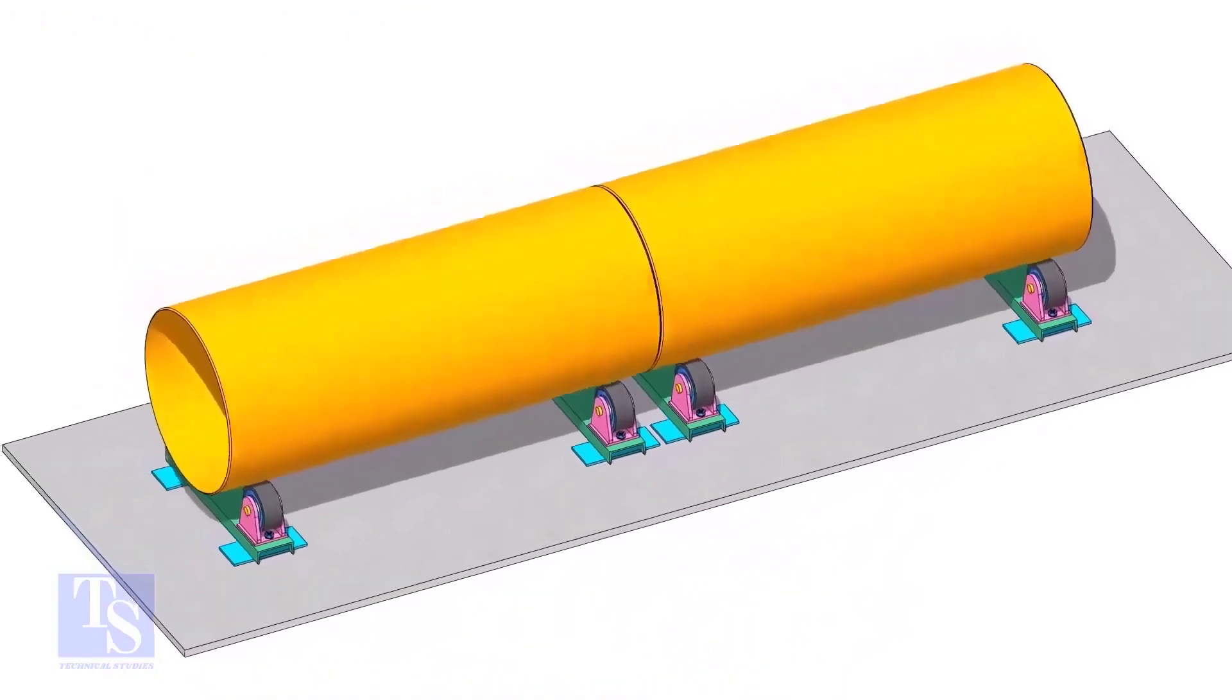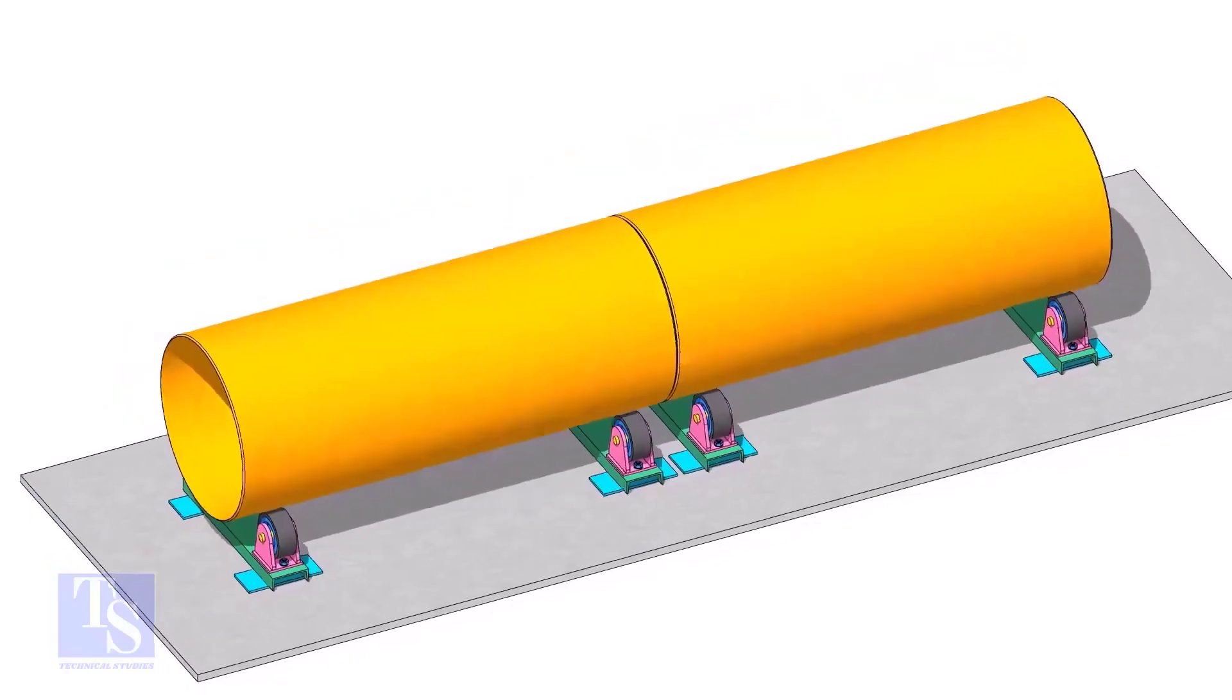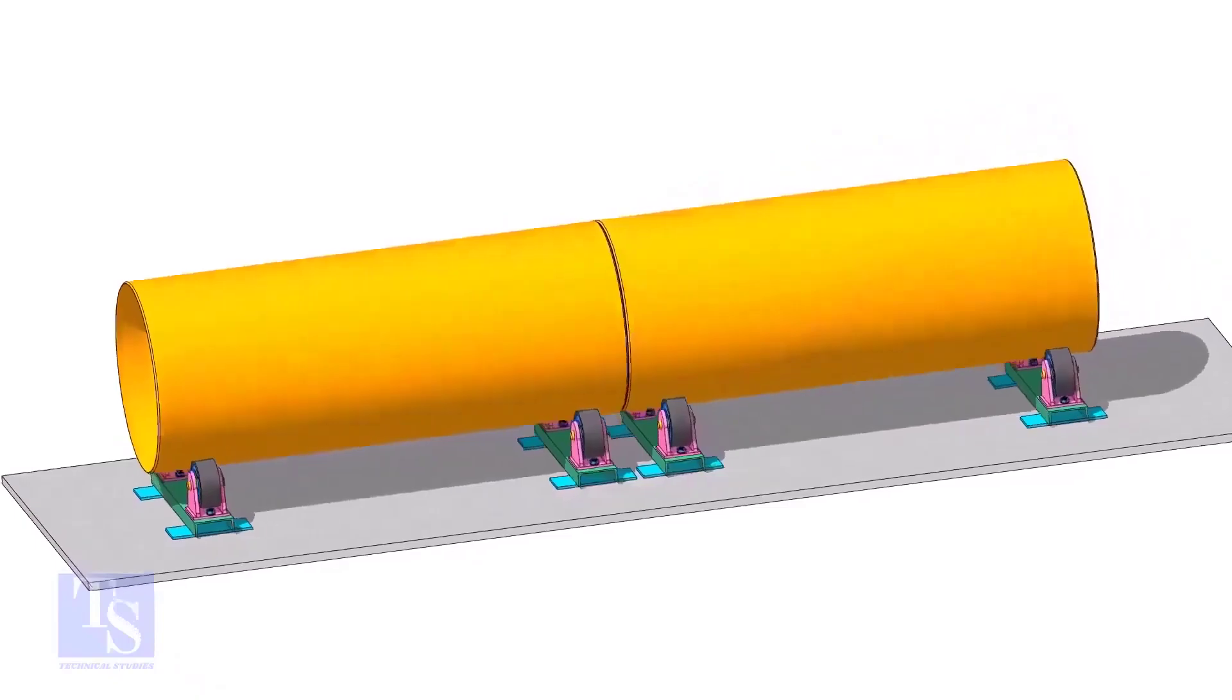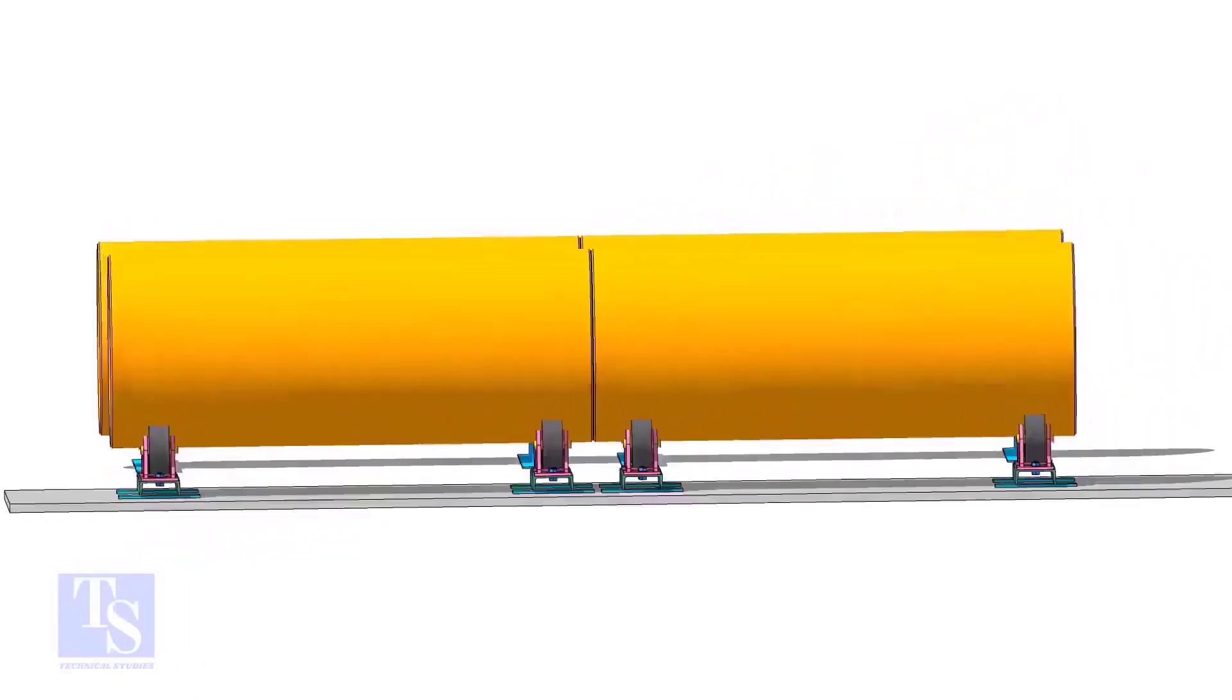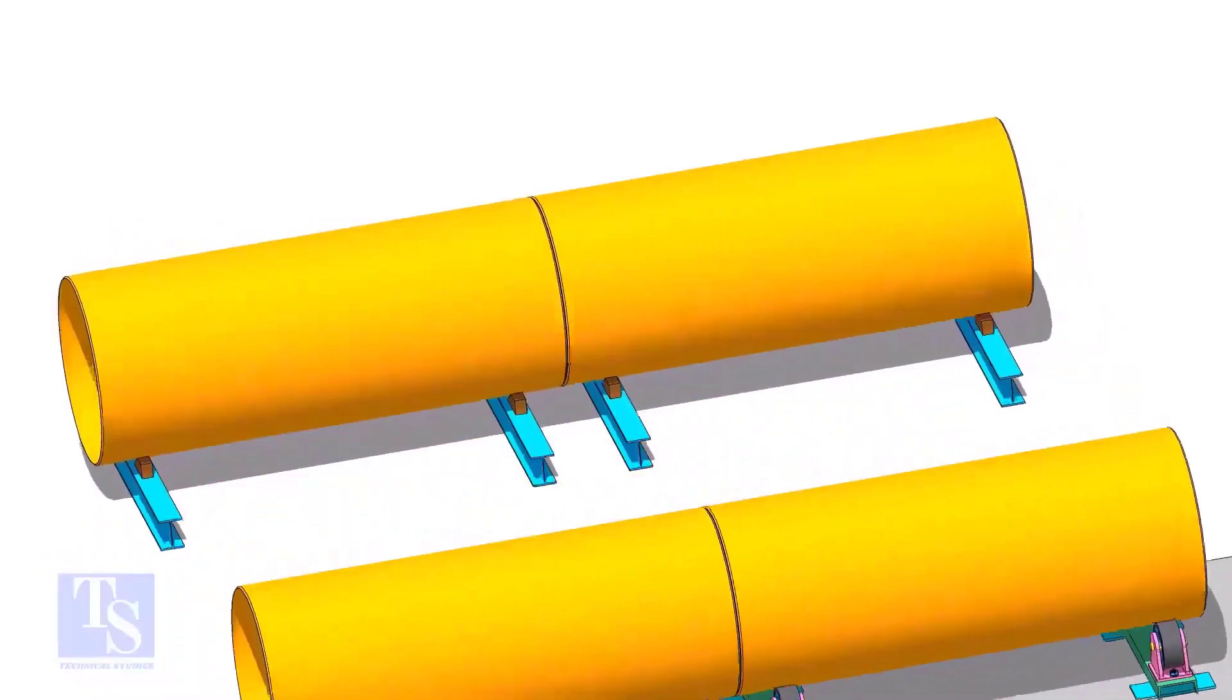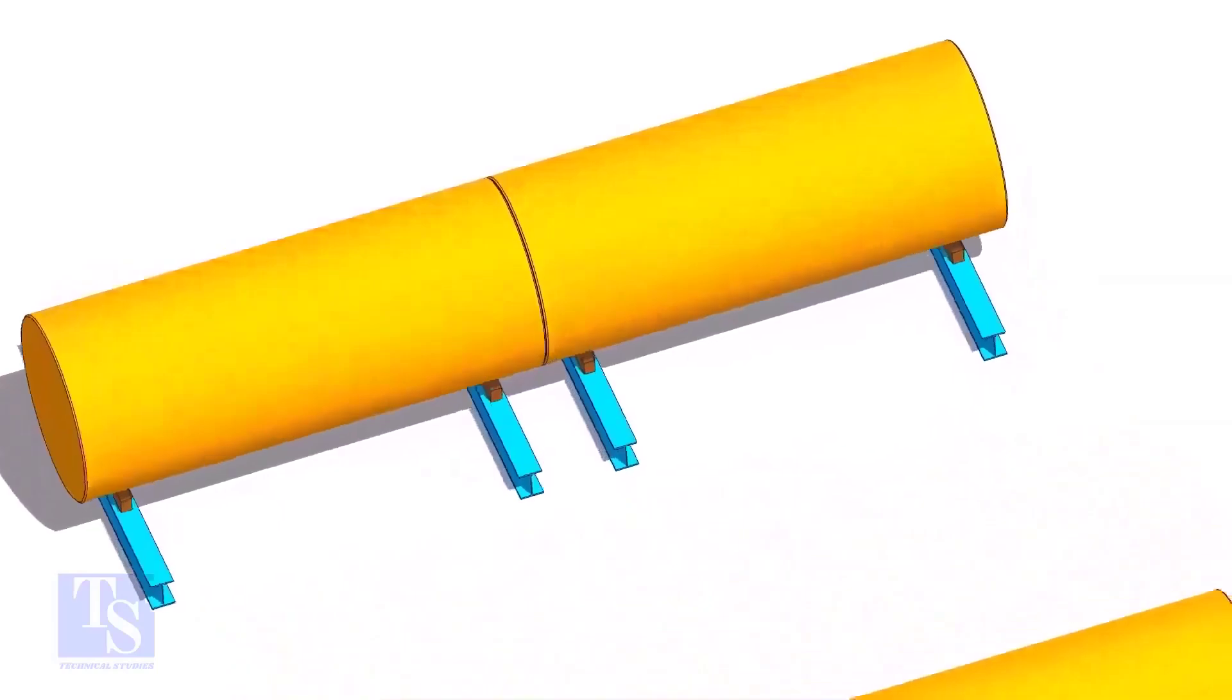You can fit up large pipes either on rollers or on beams. The method is almost the same. Remember to level the rollers or the beams before you put the pipes on it.